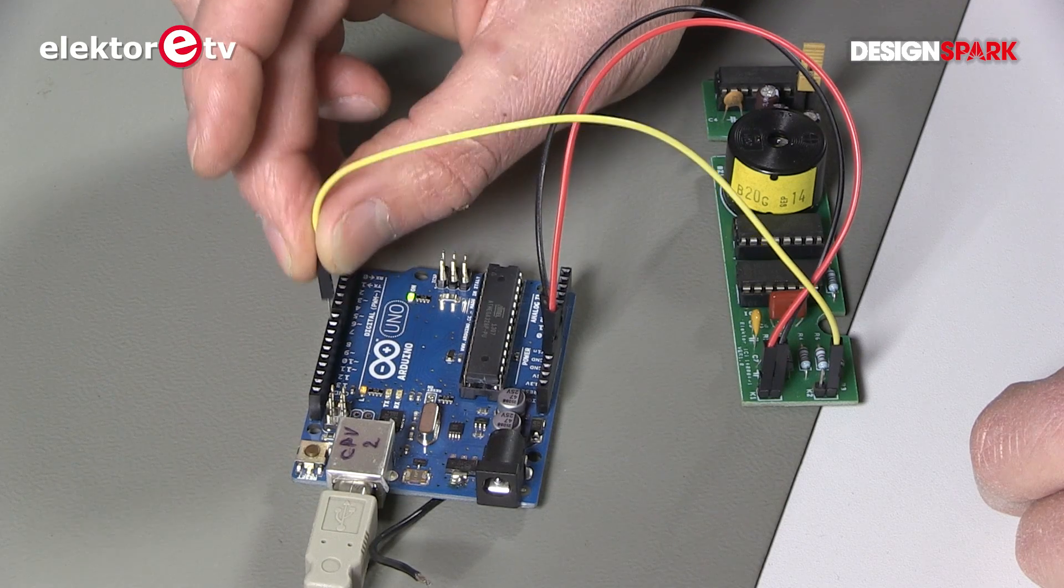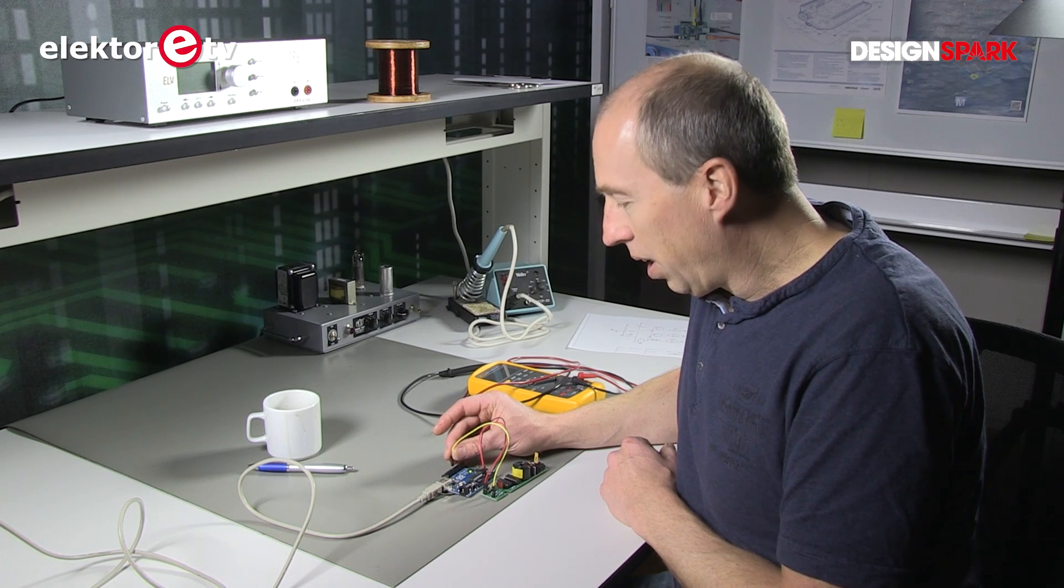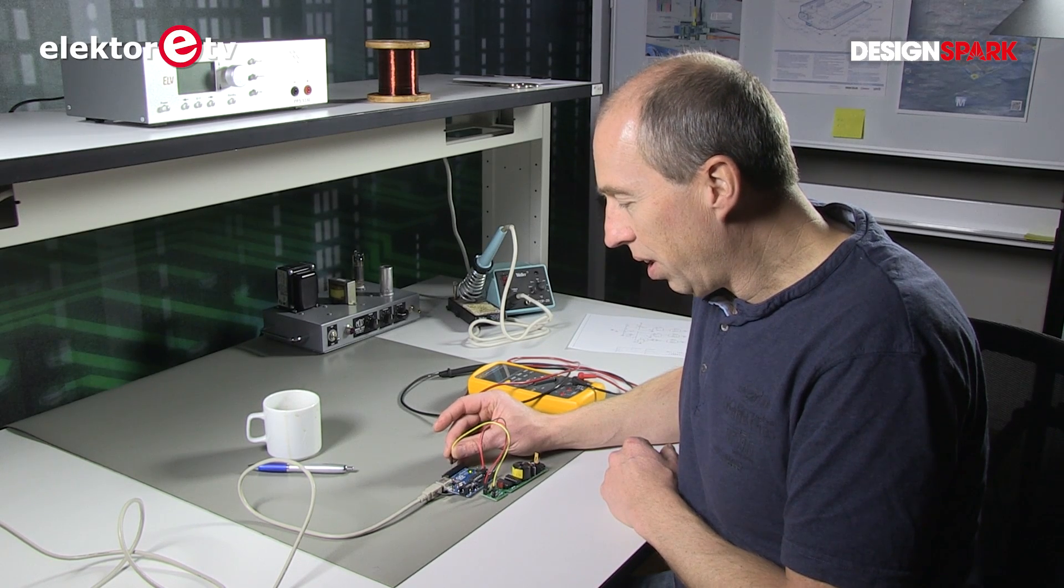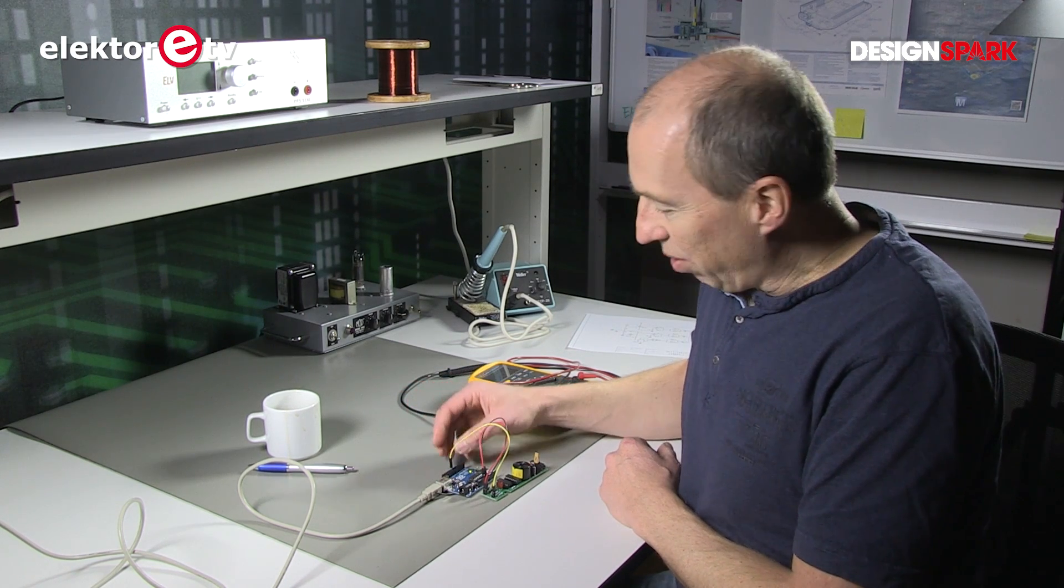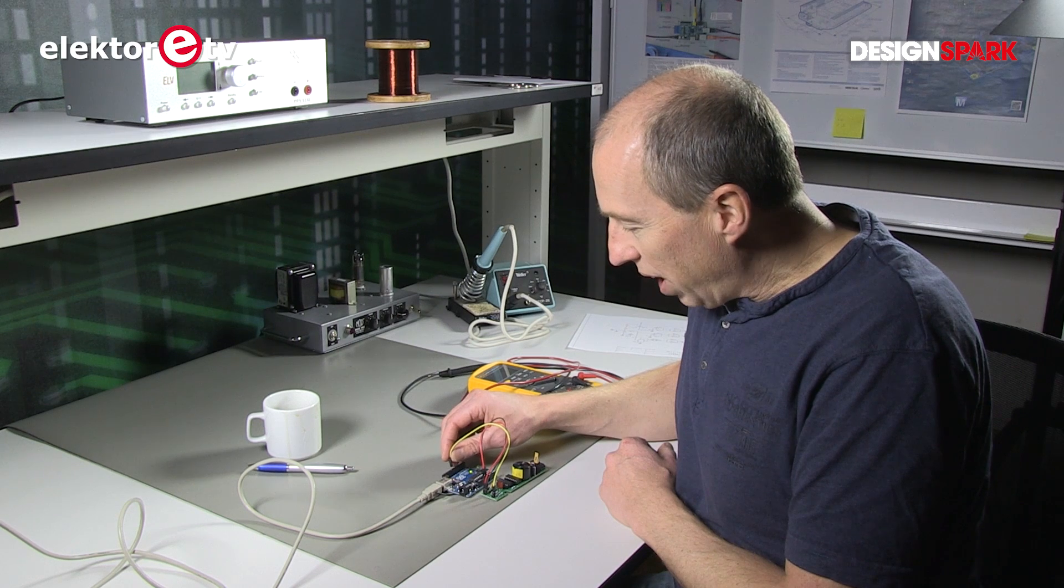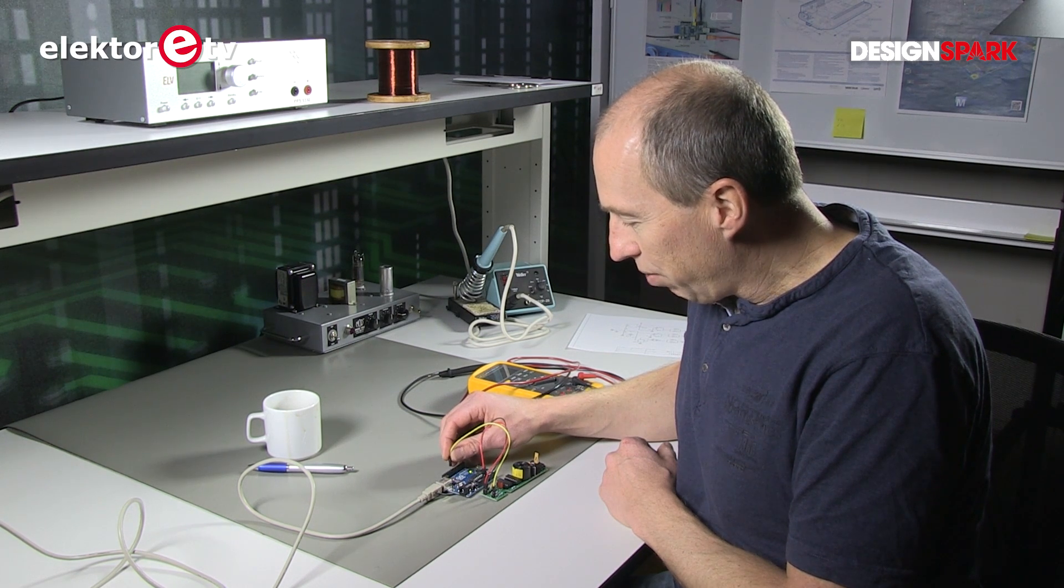This is a low level. Here we have the high level. Here is nothing. So it's either an input or tri-stated or not connected. It can even be broken. And here I have a frequency.